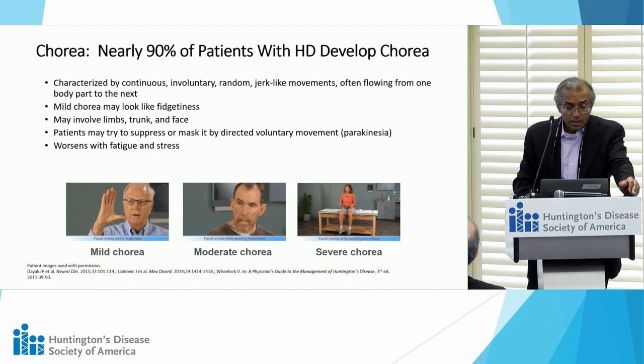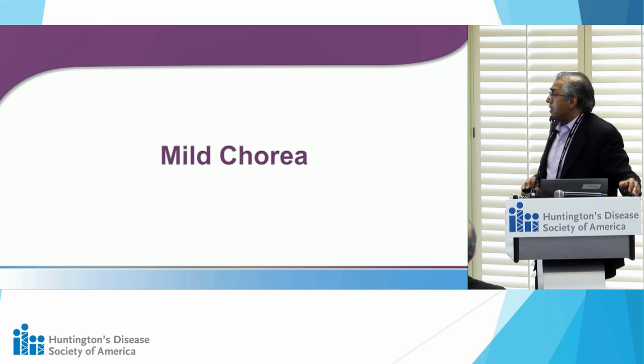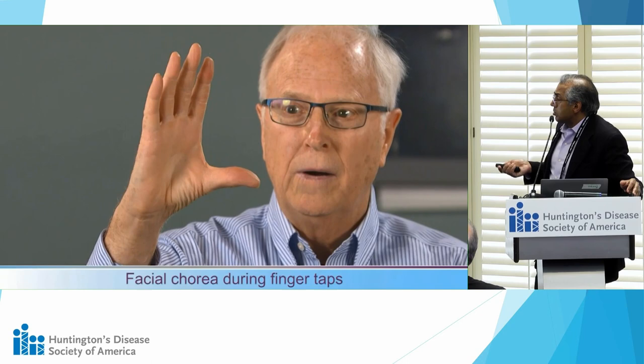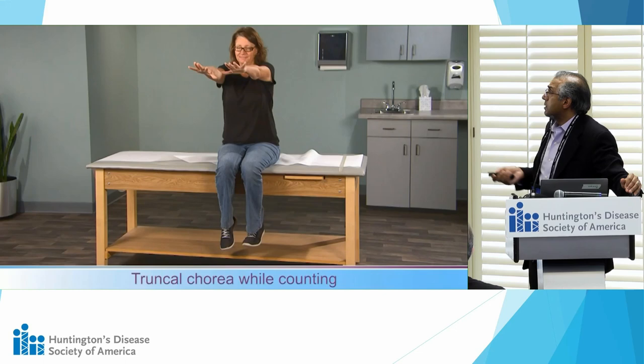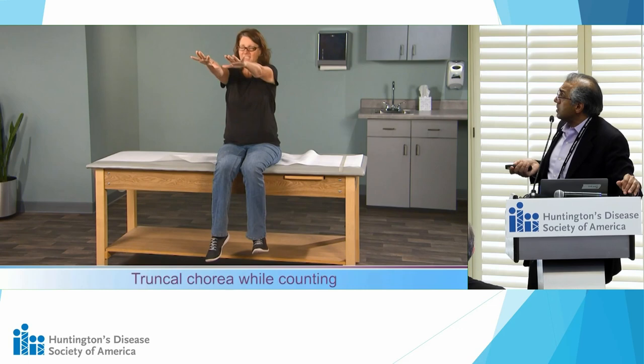Here are some examples of chorea. Starting with mild chorea — this patient doing finger tapping shows emergence of facial involuntary chorea. While counting backwards, he develops twitchy movements in his feet. This patient has not only lower extremity movements but also truncal shifting movements — milder chorea involving different body parts. Another person who just became symptomatic has chorea mainly in the distal fingers.